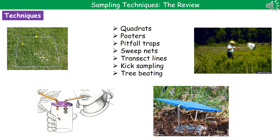The third technique is the pitfall trap, shown in the bottom right. This is where you bury something like a jar just underground and then put a little roof over it — it can be plastic or just a bit of stone — because small ground-crawling creatures walk along and fall into the jar underneath. We put the roof on top to avoid it filling with rainwater and the animals dying. The fourth one, the sweep net, is in the top right. This is what we'd use to collect things like butterflies and grasshoppers — you sweep the net through the area and they get caught in the bottom.